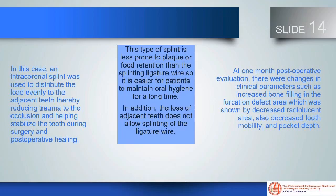In this case, an intracoronal splint was used to distribute the load evenly to the adjacent teeth, thereby reducing trauma to the occlusion and helping stabilize the tooth during surgery and post-operative healing. This type of splinting is less prone to plaque or food retention than ligature wire splinting, so it is easier for patients to maintain oral hygiene for a long time. In addition, the loss of adjacent teeth does not allow splinting with ligature wire. At one month post-operative evaluation, there were changes in clinical parameters such as increased bone filling in the furcation defect area shown by decreased radiolucency, also decreased tooth mobility and pocket depth.